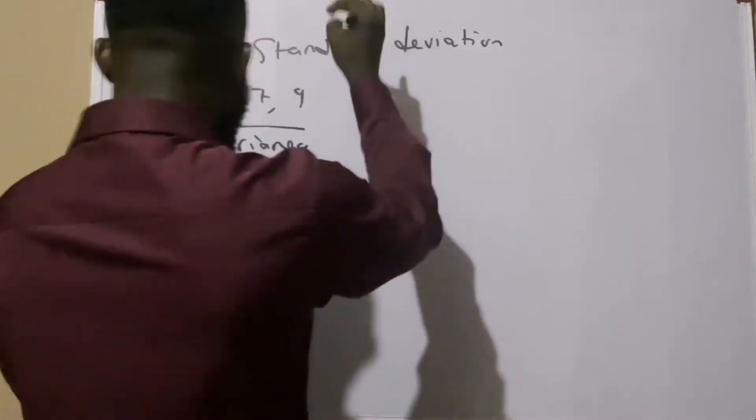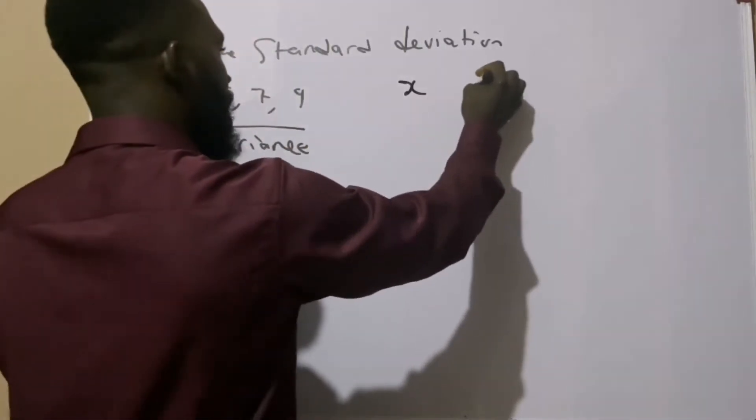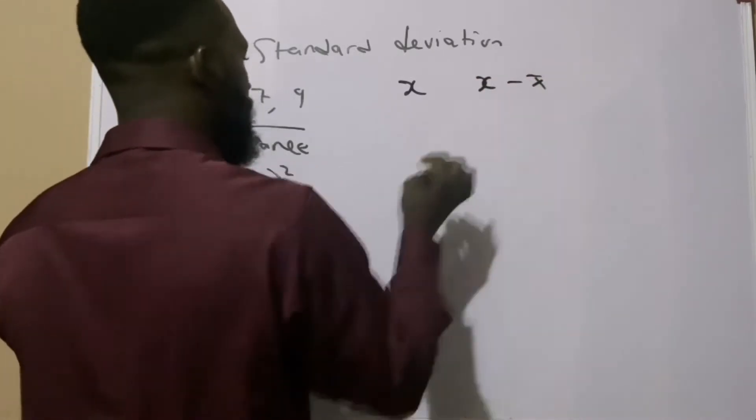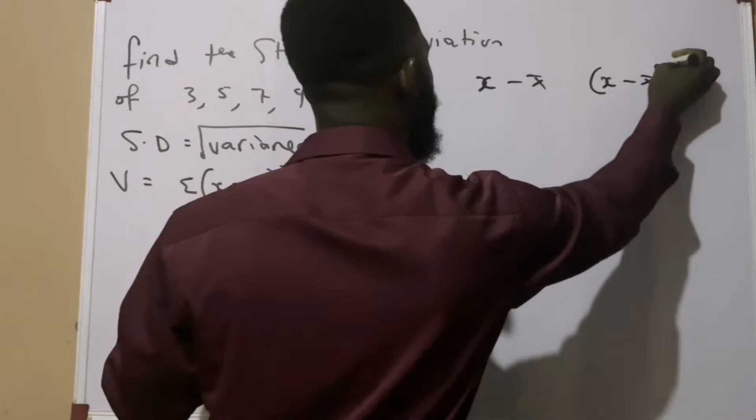Now I can best explain this using the table so that it is easier for you to understand. This is our x, and this is our (x minus mean), and this is our (x minus mean) raised to the power of 2.